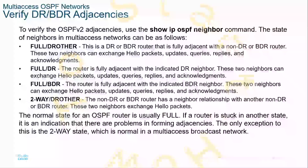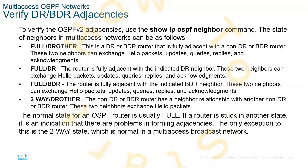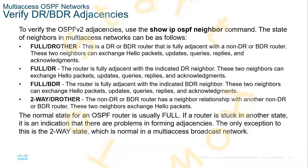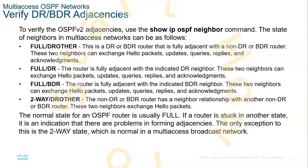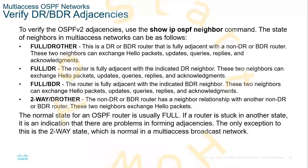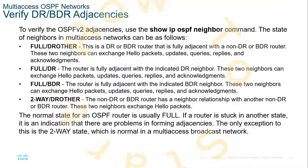To verify the DR and BDR and their adjacencies, we use the show IP OSPF neighbor command. It should state a few different things: a full drother, a full DR, a full BDR, or a two-way drother. A full drother is when a DR or BDR router is fully adjacent with a non-DR or non-BDR router. These two neighbors can exchange hello packets, updates, queries, replies, and acknowledgments. A full DR means the router is fully adjacent with the indicated DR neighbor, and they can exchange hello packets, updates, queries, replies, and acknowledgments.